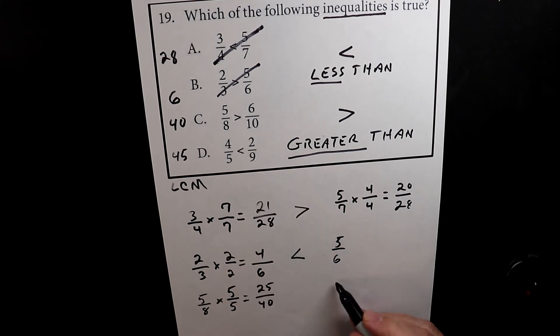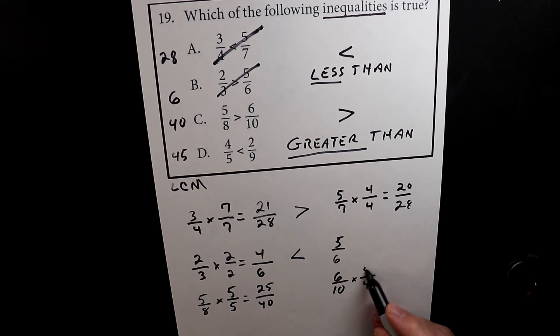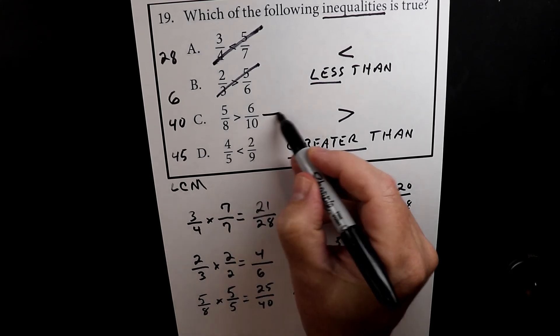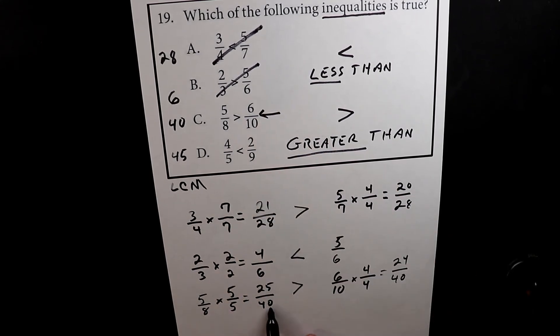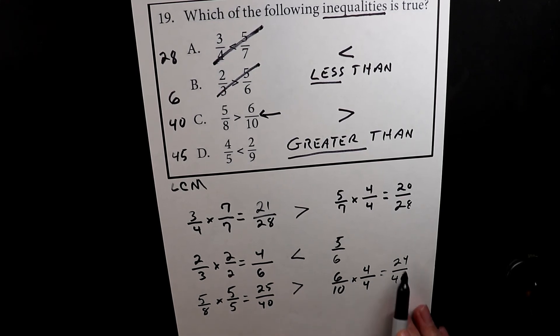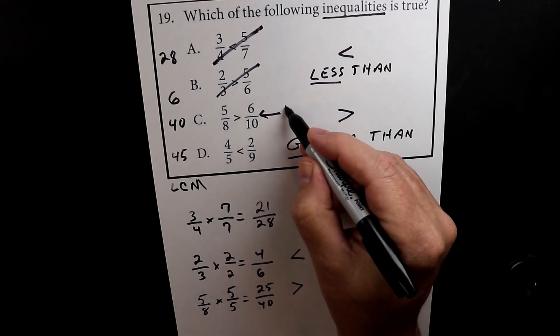On this side, we have 6 over 10. So to turn the 10 into a 40, we have to multiply it by 4 over 4. So 10 times 4 is again 40, 6 times 4 is 24. So 25 over 40 is greater than 24 over 40. So this is the right answer, because 25 over 40 is the same as 5 over 8, and 6 over 10 is the same as 24 over 40.